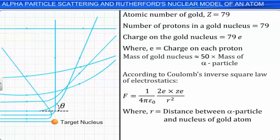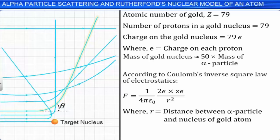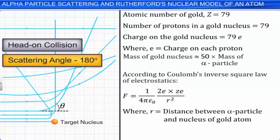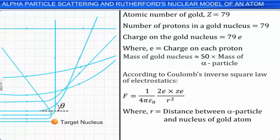For relatively small values of b, when the alpha particles are directed very close to the nucleus, there are huge deviations. If the alpha particles are directed in the same line as the gold nucleus, they undergo a head-on collision. In this case, the impact parameter is the least and the scattering angle is approximately 180 degrees — such alpha particles bounce back. Since very few incident alpha particles undergo head-on collision, it can be said that the mass of the gold atom is concentrated in a very small region called the nucleus.